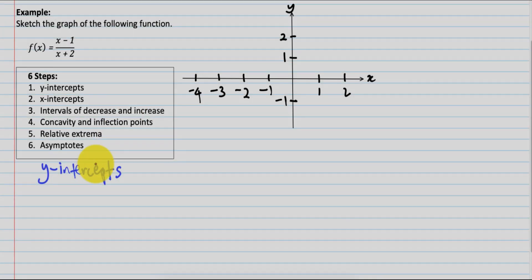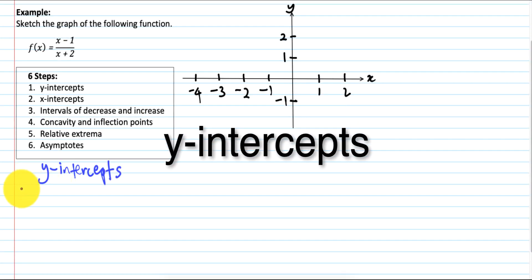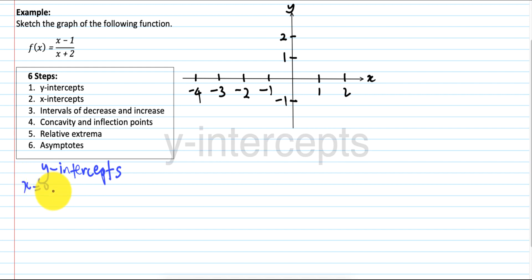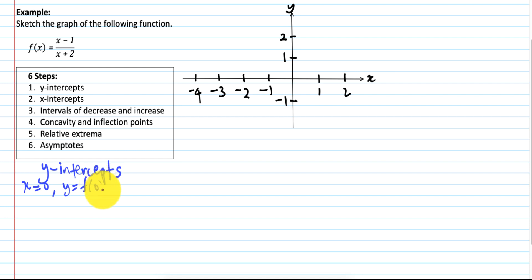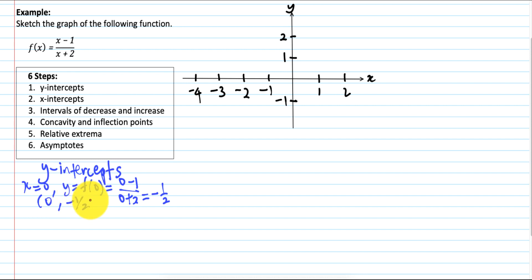Step 1: Y-intercept. To find the Y-intercept, we set X equal to 0. So Y is equal to F(0) = (0 minus 1) over (0 plus 2) = minus 1 over 2. So the point is (0, -1/2). Label it on the graph.